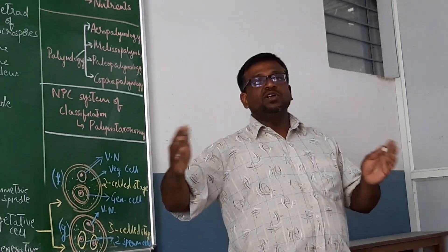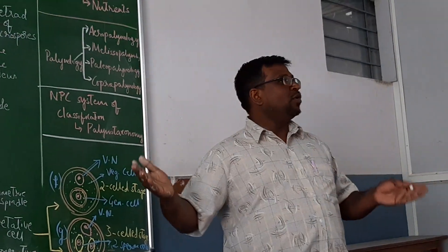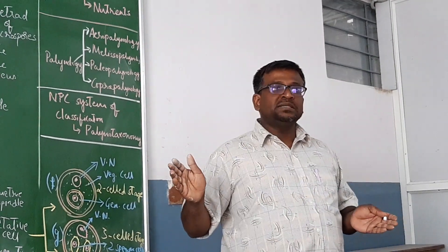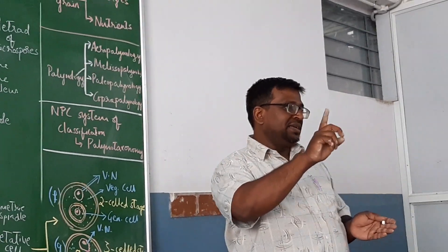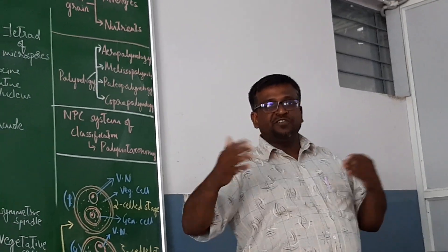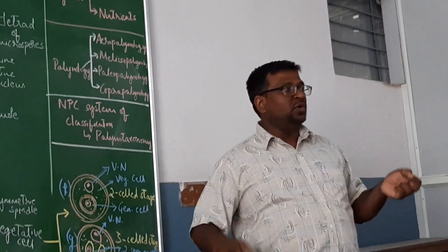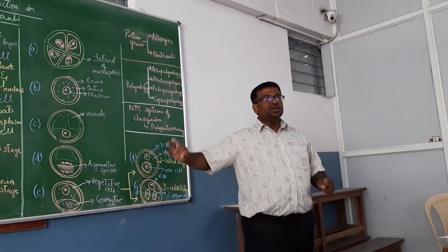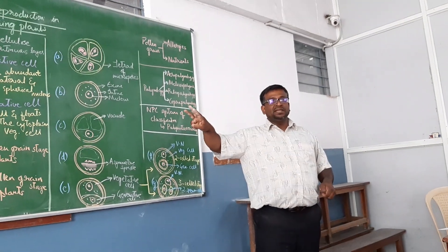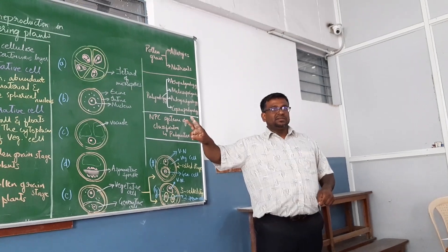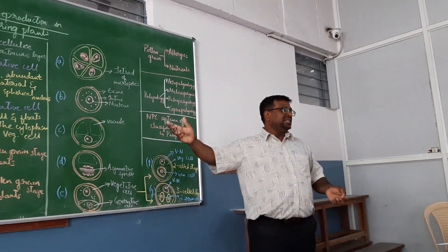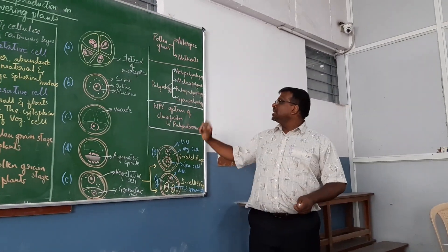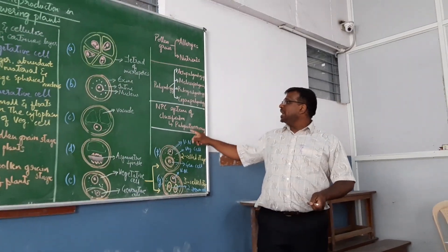There is one easy way to differentiate between monocots and dicots. All monopallinous plants have a single aperture. Monocots are monopallinous plants, while dicots are tripallinous plants — they have three apertures. We call that palyno-taxonomy.